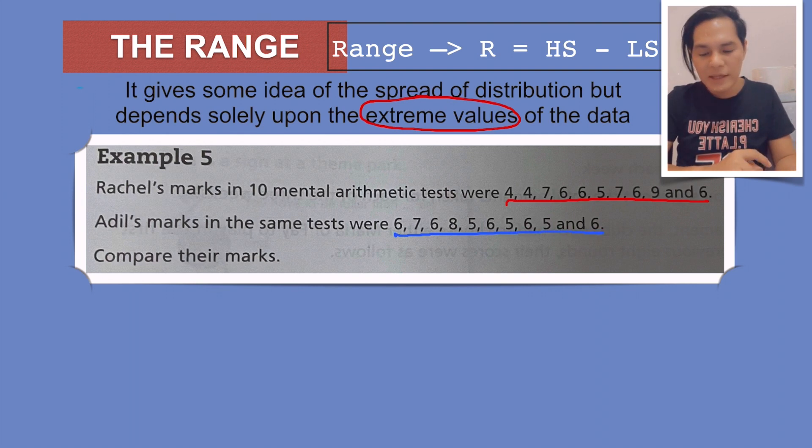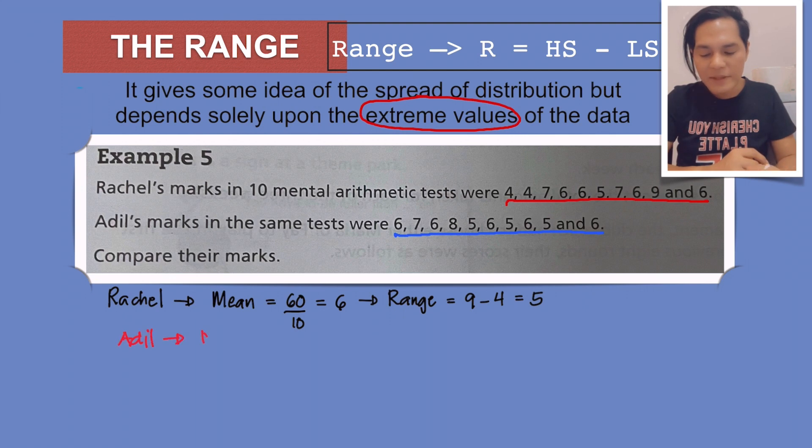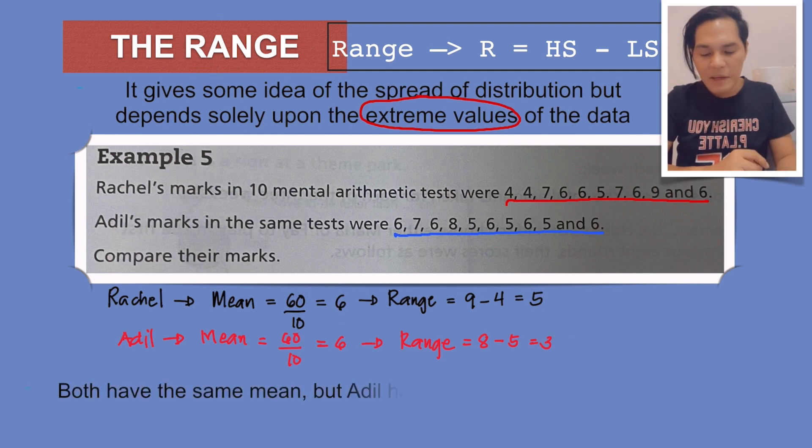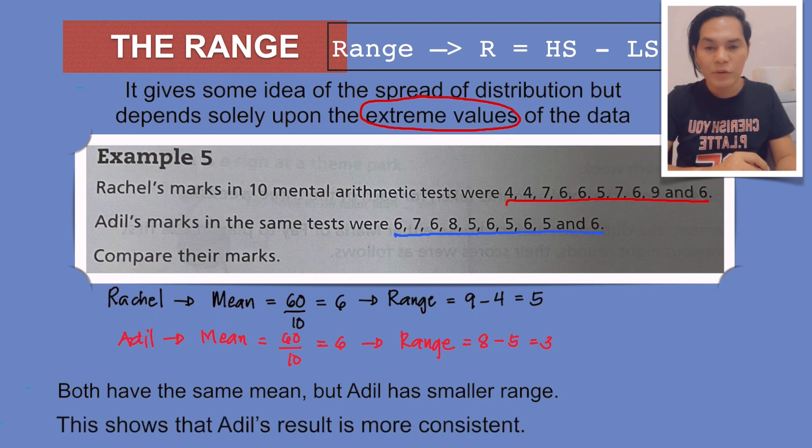So first, look at this. Rachel's marks and Adil's - they have the same mean, but the ranges are different. Rachel's is 5, Adil's range is 3. Both have the same mean, but Adil has a smaller range. This shows that Adil's result is more consistent.